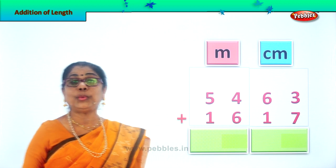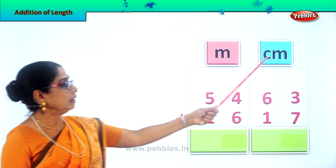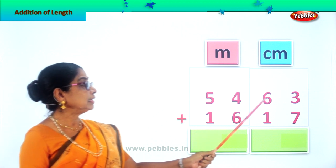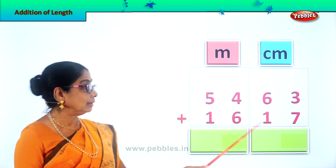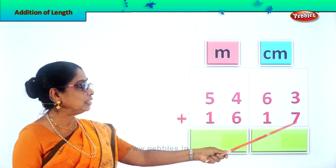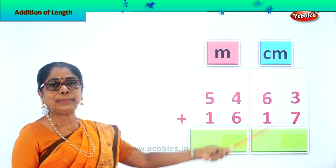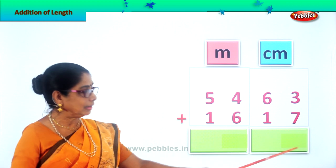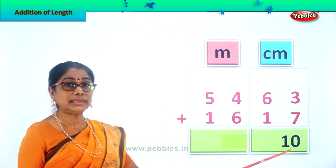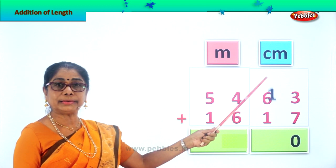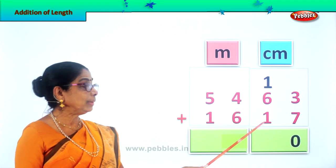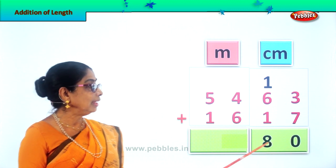Now we have a different addition of length. Over here we have centimeters and here you have meters. 54 meters 63 centimeters plus 16 meters 17 centimeters — you are supposed to add this. Let's add what is in the 1's place. 3 and 7 — 7 plus 3 is 10. We leave the 0 here and take the 1 ten, carry it over. Now we add them: 6 plus 1 is 7, 7 plus 1 is 8. So we have here 80 centimeters.